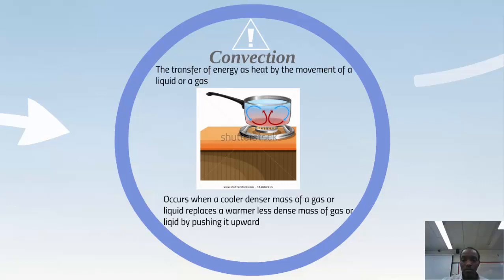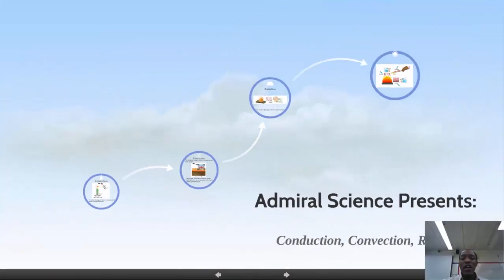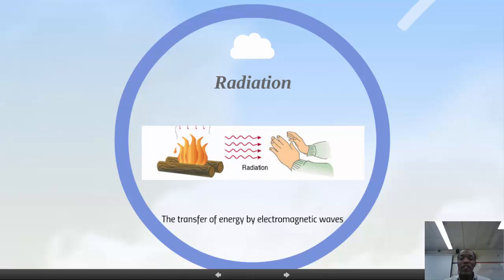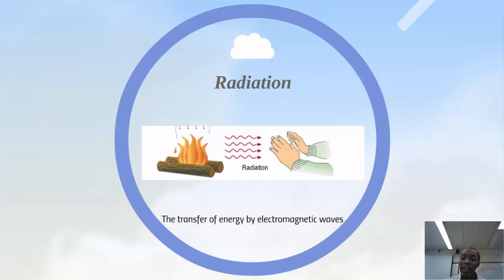Lastly, we have radiation. Radiation is the transfer of energy by electromagnetic waves. Unlike conduction, where you have to touch the heat source, with radiation you don't. For example, you can feel the warmth from an open fire without touching it — that's radiation. The electromagnetic waves radiate toward you so you can feel the heat.